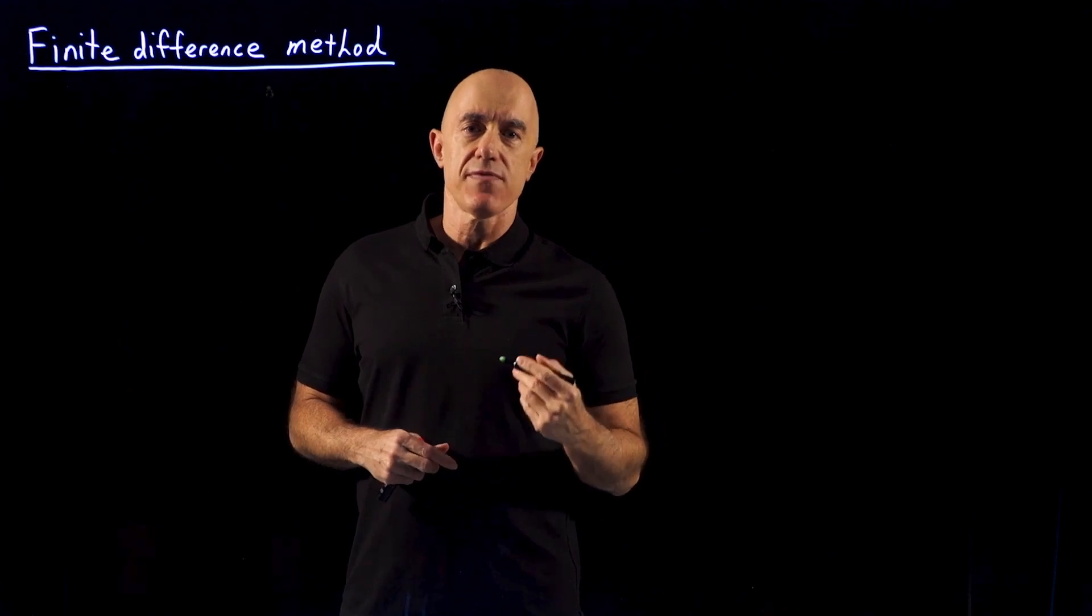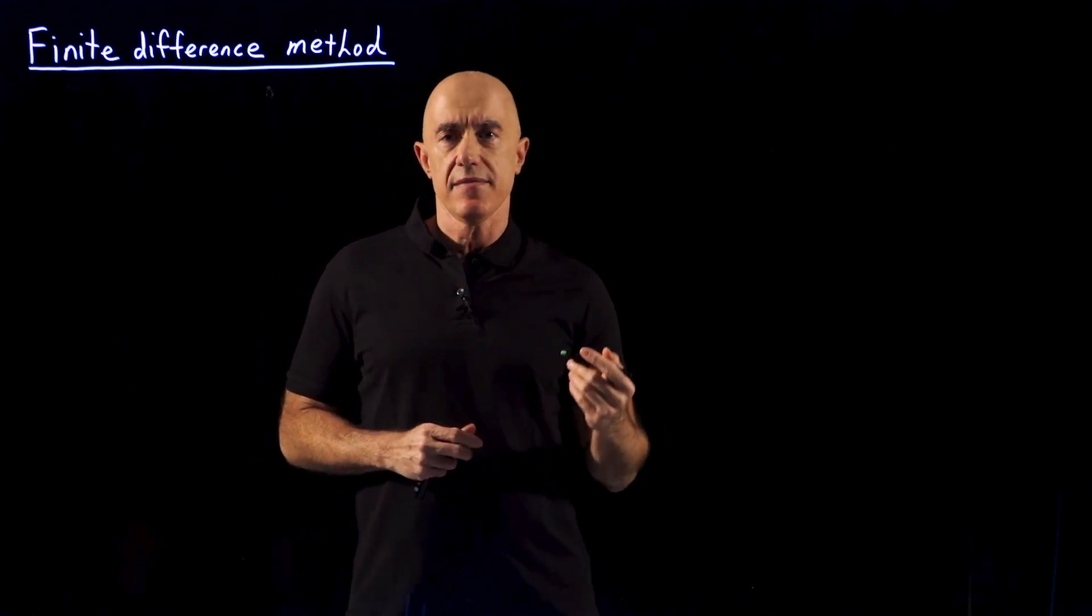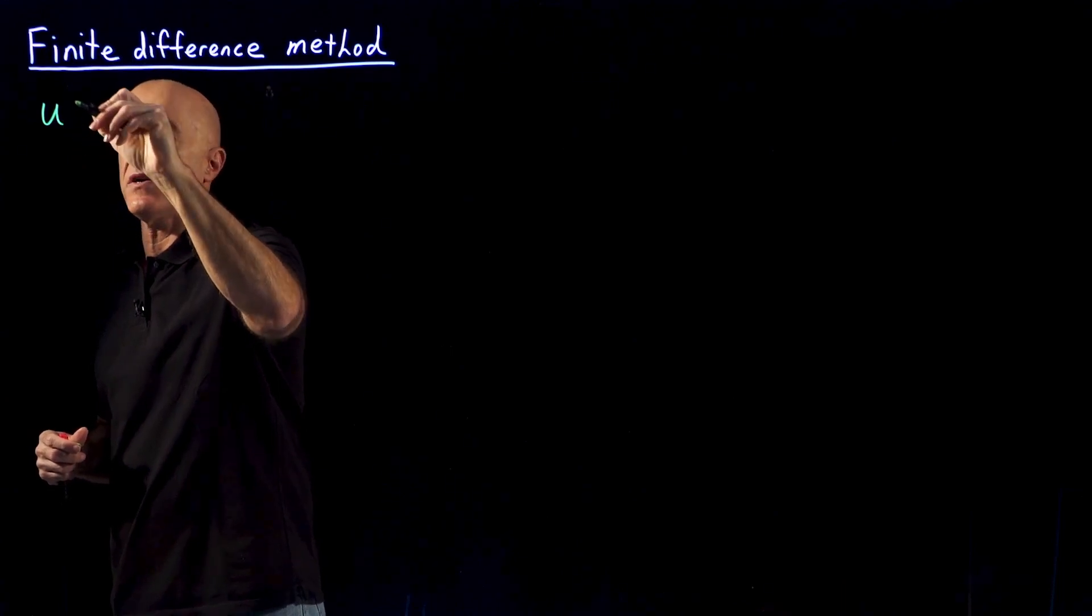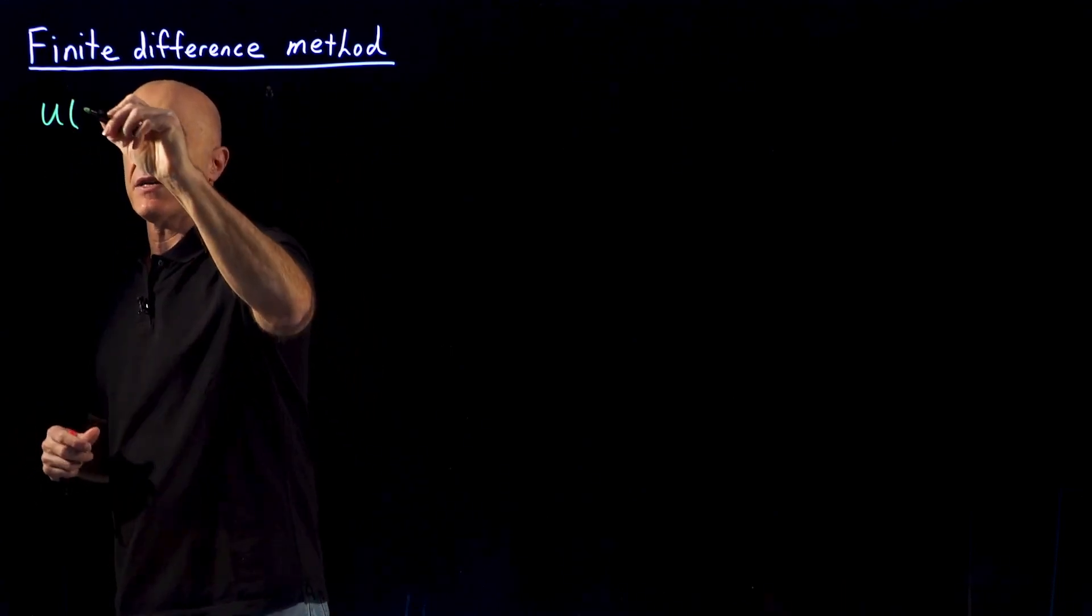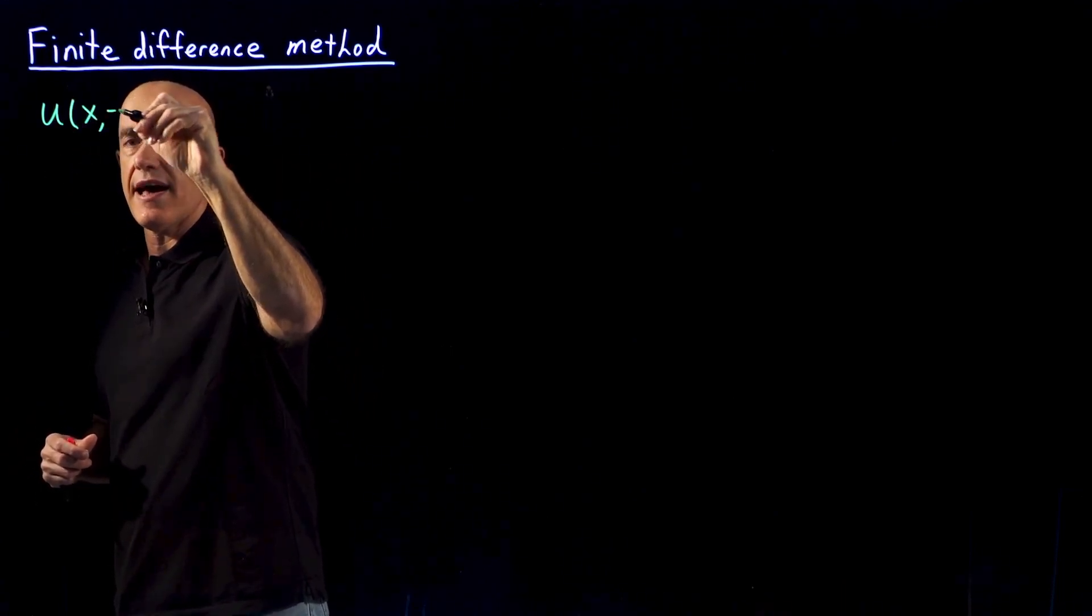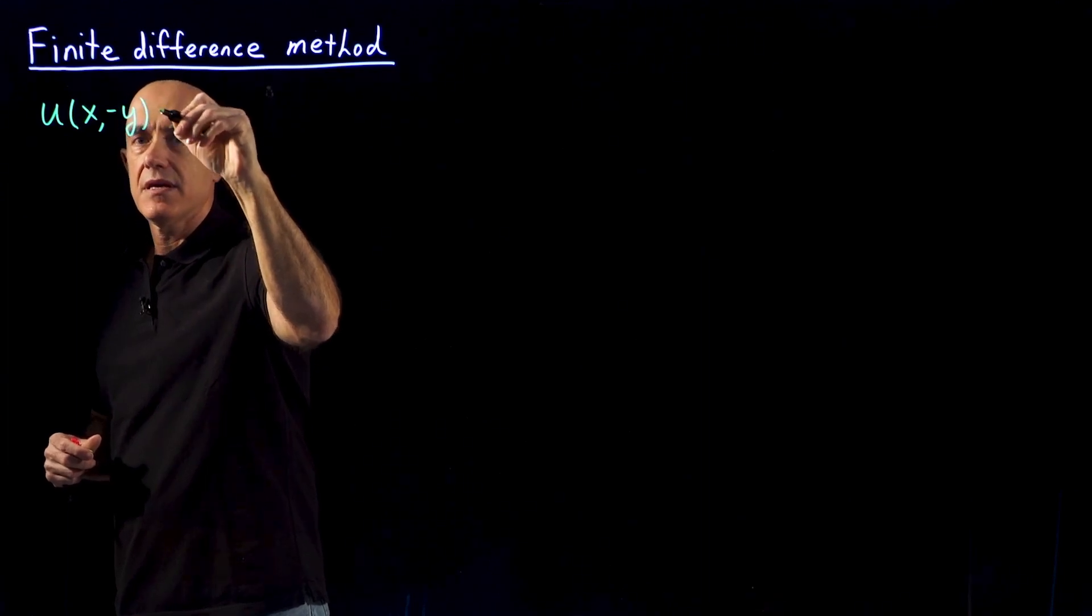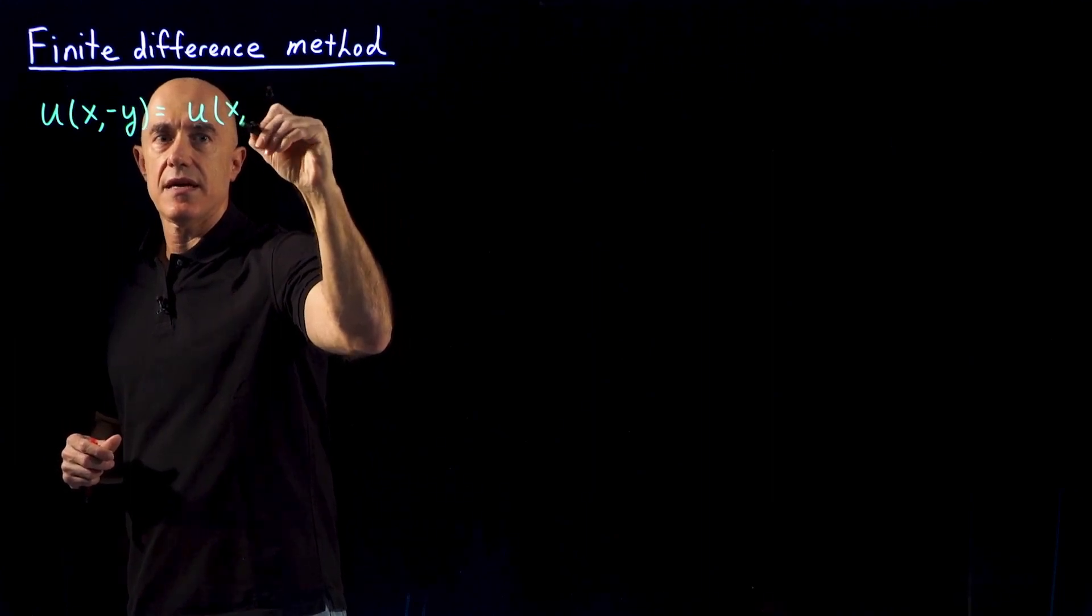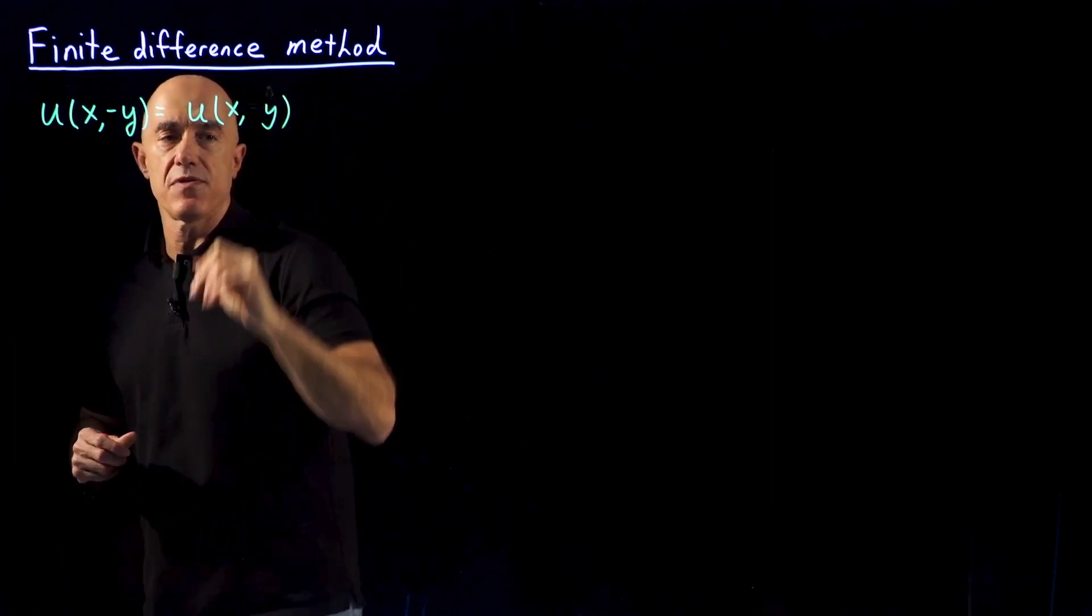We want to use the symmetry of the problem when the flow is steady. The symmetry is that the velocity field in the x direction in the lower half of the plane is equal to the velocity field in the x direction in the upper half of the plane.